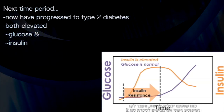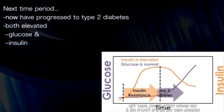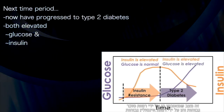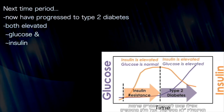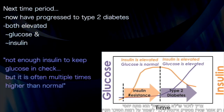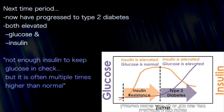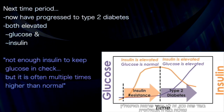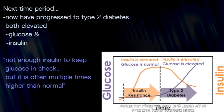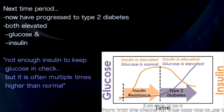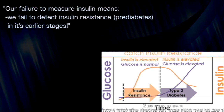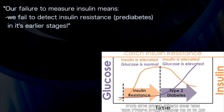As we progress beyond that, we move eventually into frank type 2 diabetes — a state defined by both elevated glucose and elevated insulin. Even though we say insulin becomes insufficient in some people, insufficient is a relative term. It simply means there's not enough insulin to keep glucose in check, but that is not to say that insulin has become itself low. It is often still significantly higher — multiples higher than in a normal, healthy insulin-sensitive individual. Our failure to measure insulin means we are failing to detect insulin resistance in its earliest stages.